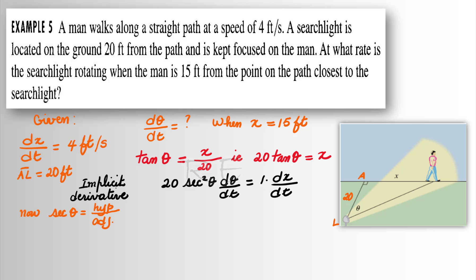Secant of any angle θ is equal to the hypotenuse over the adjacent side. And x, the path, is 15 feet. Since we have a right triangle...